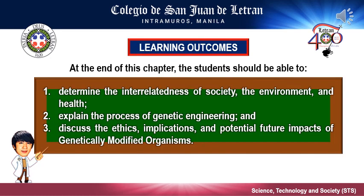So what are the learning outcomes for this chapter? One is to determine the interrelatedness of society, the environment, and health. Two, explain the process of genetic engineering. And three, discuss the ethics, implications, and potential future impacts of genetically modified organisms.